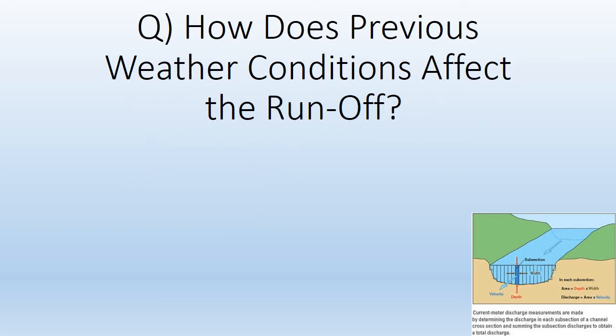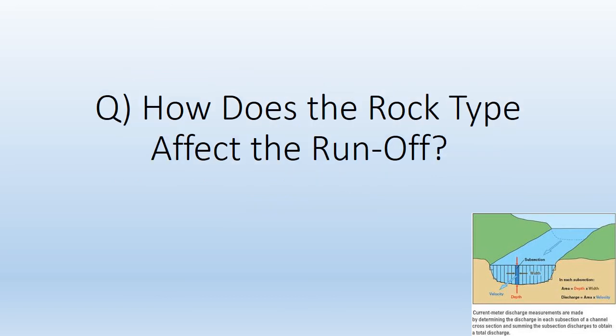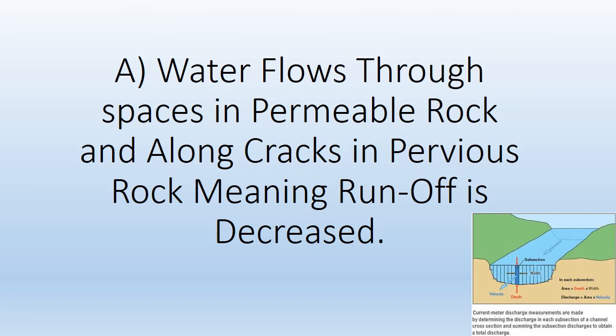How does previous weather conditions affect the runoff? Lots of rain can lead to soil becoming saturated, meaning runoff will increase. How does rock type affect the runoff? Water flows through spaces in permeable rock and along cracks in pervious rock, meaning runoff is decreased.